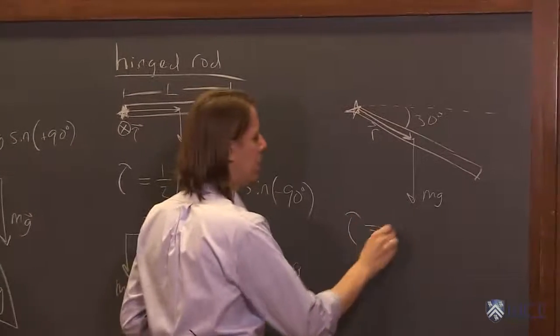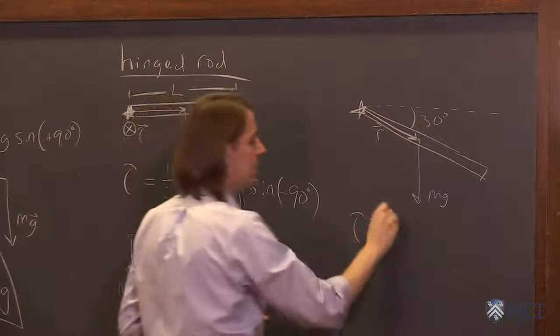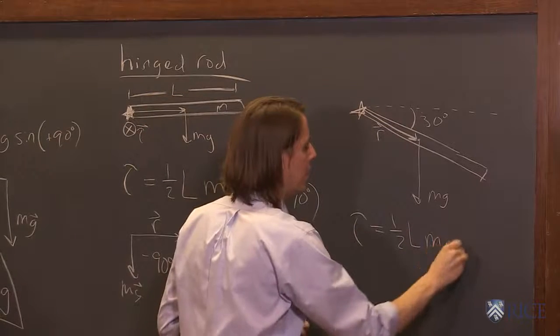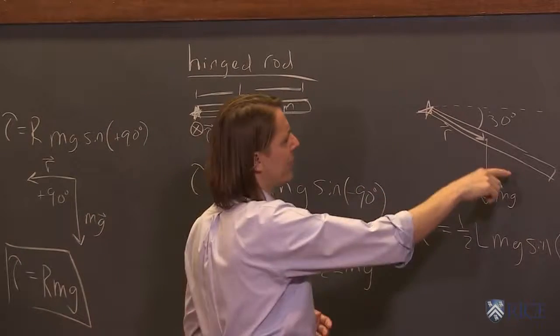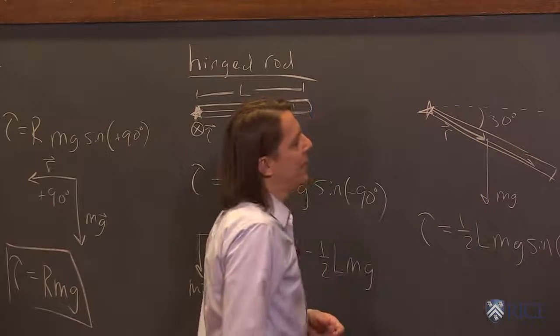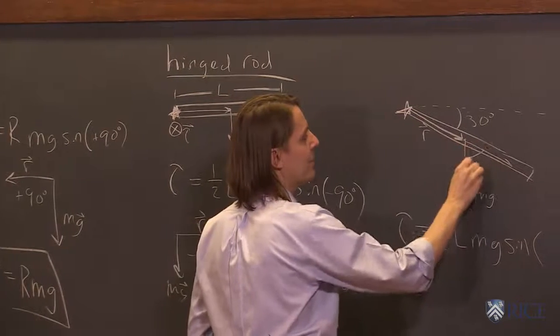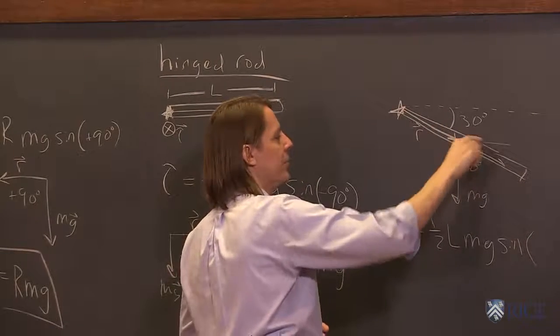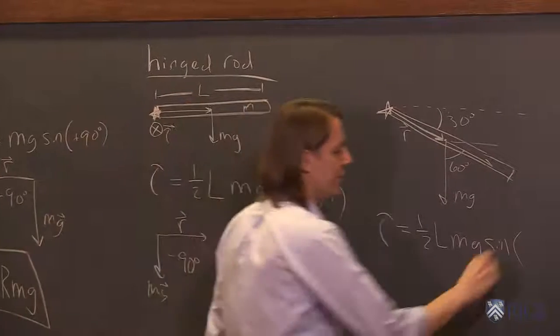Well, the torque is still, the length of that vector is still 1 half l. And the force is still mg. But now we just have the sine of a different angle. If we draw these tail to tail, I'll just do it on the drawing. I'll just pick up the r and do it like that. And you can see that the angle we care about is actually 60 degrees. Because if we draw horizontal there, that's 30. And 60 plus 30 is 90. Do the geometry.